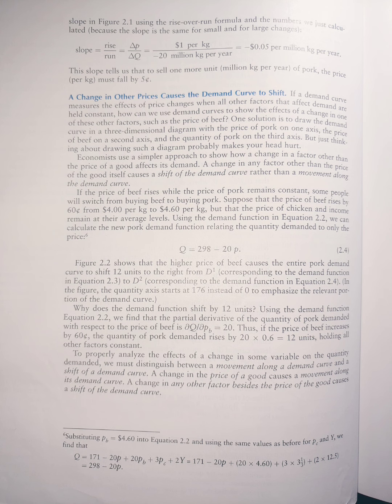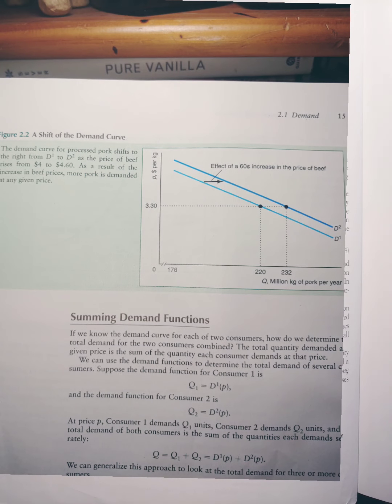On the vertical axis, we have the price, and on the horizontal axis, we have the quantity in millions of kilograms of pork per year.